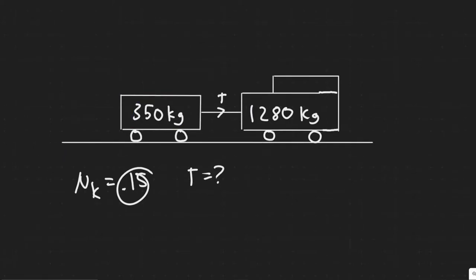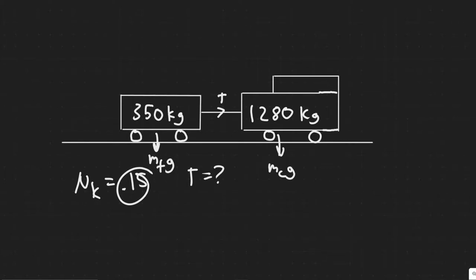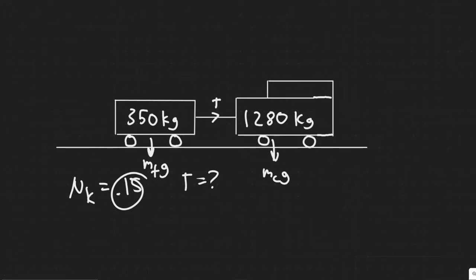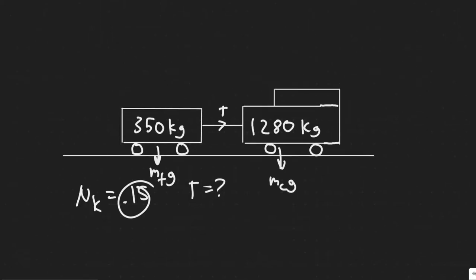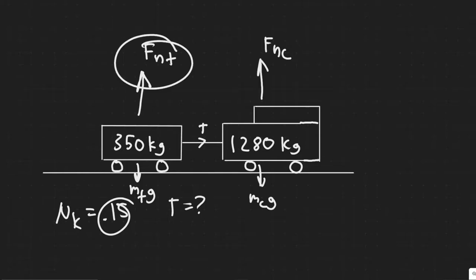Starting off, obviously we have Mg. I'm going to call this Mc — mass of the car — times g. This is just the force due to gravity, written downwards for the car. And then for the trailer, we have Mt times g, mass of the trailer times gravity. We also have to label the normal force for each of these. The normal force always acts perpendicular to what the object is touching, as a result of Newton's law. So we call this F sub N of the car, and F sub N of the trailer.